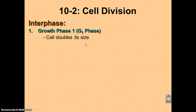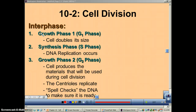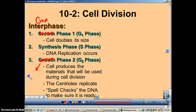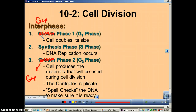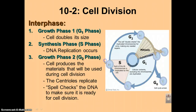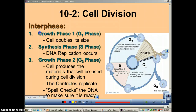Interphase is basically made up of three different phases. There's a typo in the diagram — the word 'growth' should be replaced with 'gap.' So you have gap phase one and gap phase two. Since 'gap' is too many letters to write, they use the symbols G1 and G2.